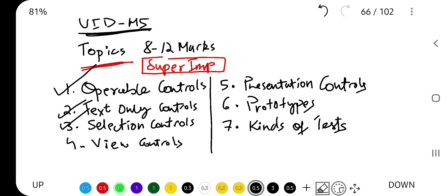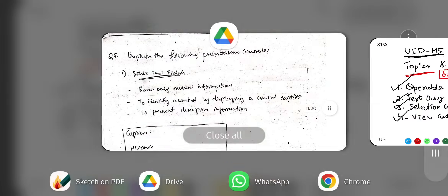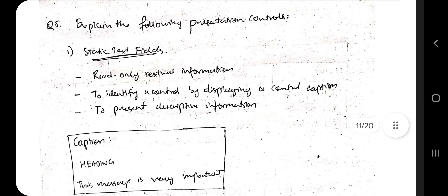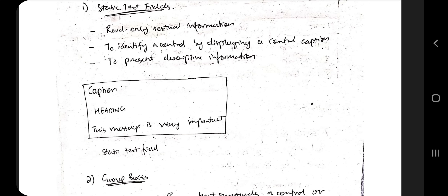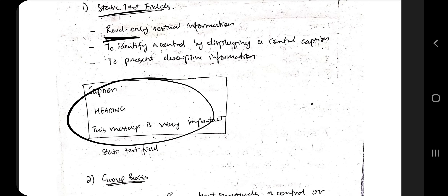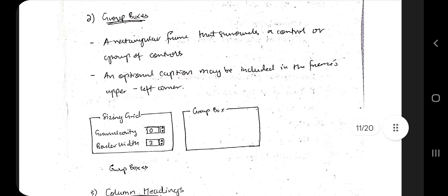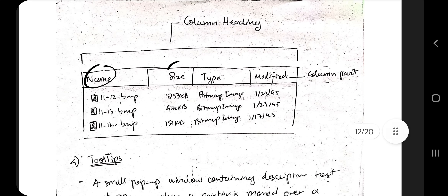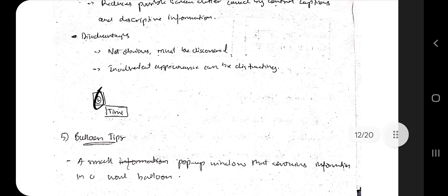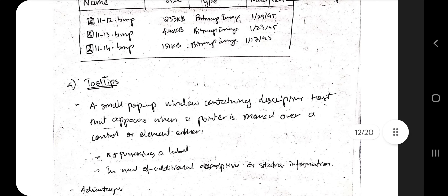The last topic from chapter one of module five is presentation controls. A static text field simply displays a value — it is read-only and cannot be modified. Group boxes contain two or more elements in a single entity for displaying multiple things together. Column headings are the header labels above columns in a table or list.